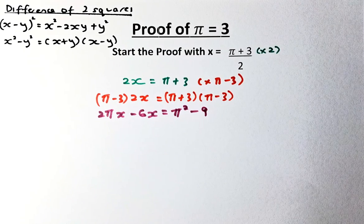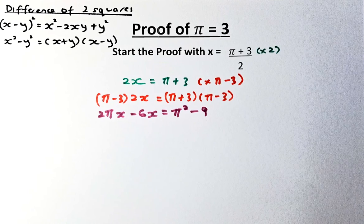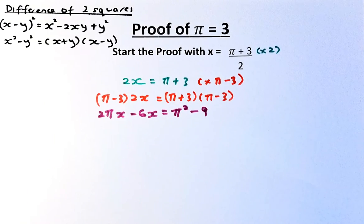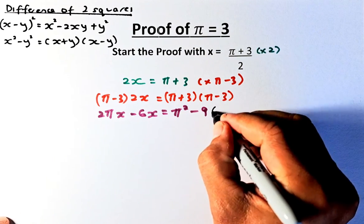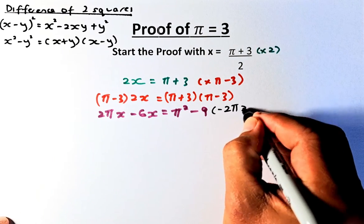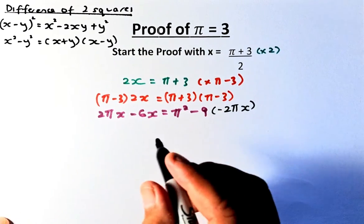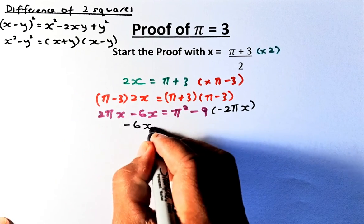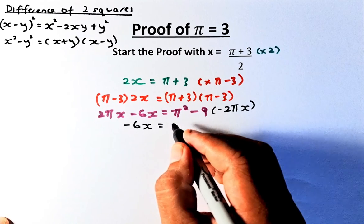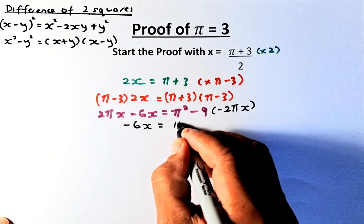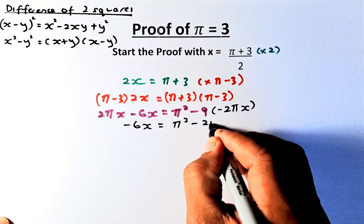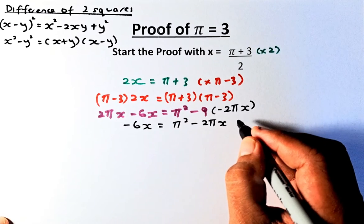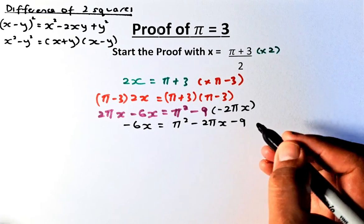To simplify, we subtract 2pi·x from both sides of the equation. The 2pi·x on the left cancels out, leaving minus 6x. On the right-hand side we get pi squared minus 2pi·x minus 9.